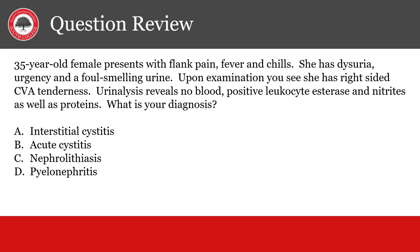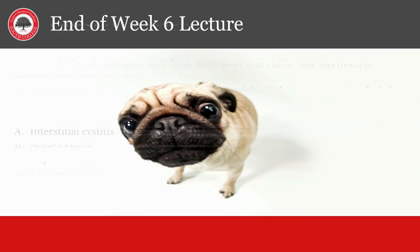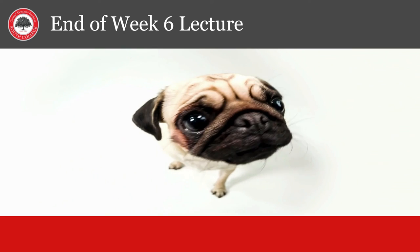A 35-year-old female presents with flank pain, fever, and chills. She has dysuria, urgency, and foul-smelling urine. Upon examination, she has right-sided CVA tenderness. Urinalysis reveals no blood, positive leukocyte esterase and nitrites, as well as protein. What is your diagnosis? The answer is pyelonephritis, as the patient has dysuria, urgency, fever, chills, flank pain, and CVA tenderness on the right side. She also has pyuria shown by urinalysis. It is not cystitis as she has fever and flank pain with CVA tenderness. IC is not likely with the infection. She has no blood in the urine, so nephrolithiasis would also be unlikely. This ends the week 6 lecture. Now go ace that exam.